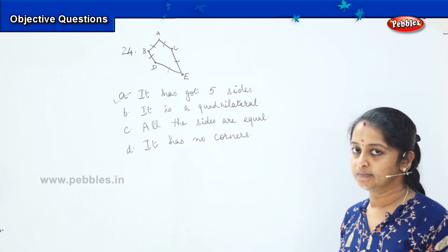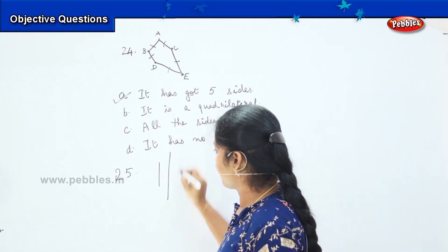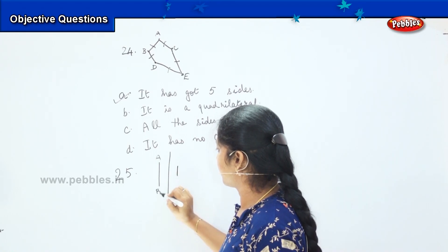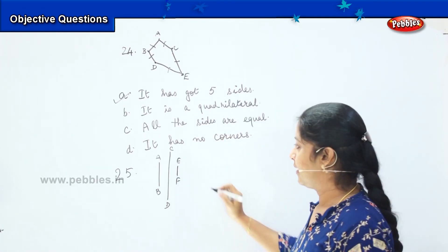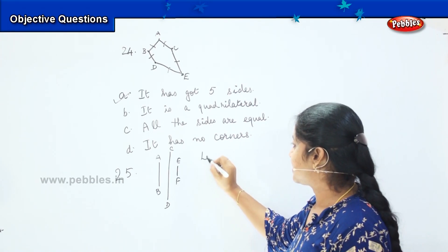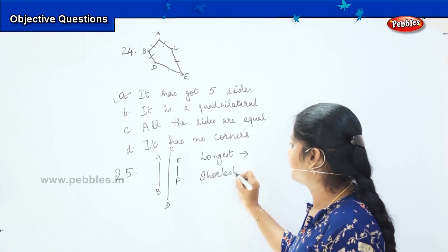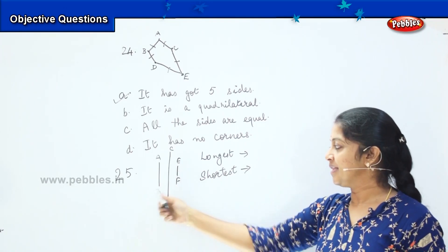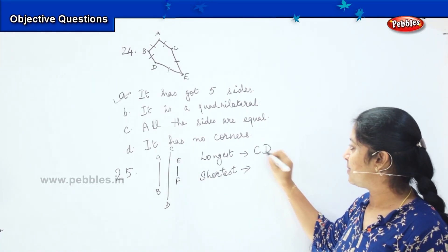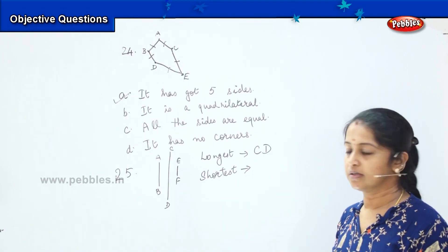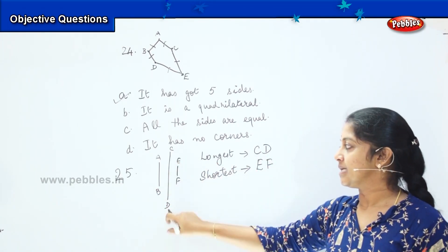Shall we move to the next question? Here is the next question. You have to identify in this given set of lines which is the longest line and which is the shortest line. Which is the longest? Is AB the longest? No. Is CD the longest? Yes. So my right answer will be CD. And which is the shortest? EF, right? So EF is the shortest among the three and CD is the longest among the three.